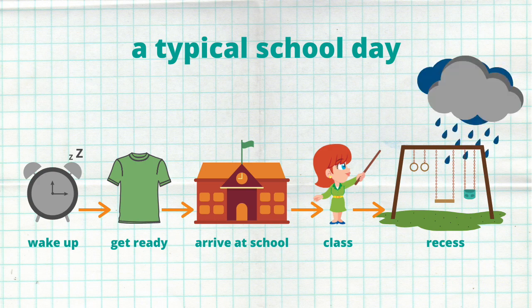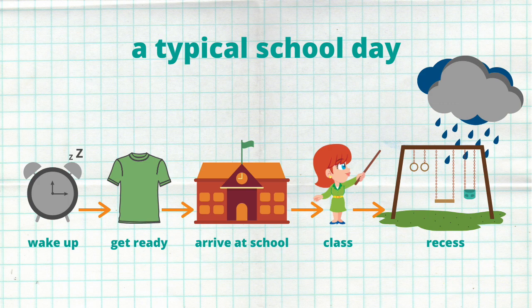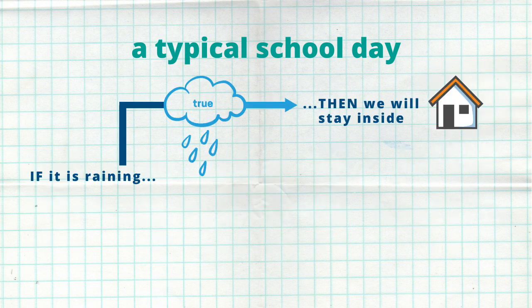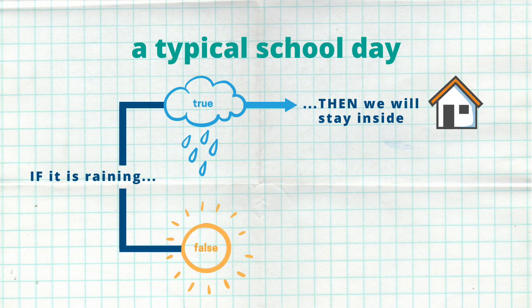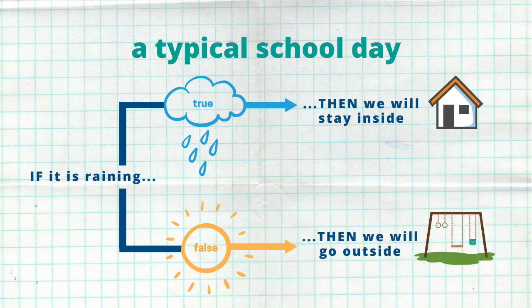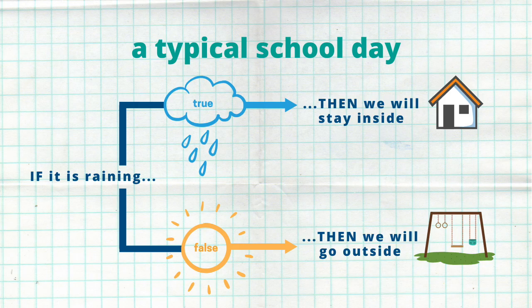But what if it's raining? Then an exception to this rule must be made. If it is raining, then you will stay inside. But if it is not raining, then the condition is false, and we will go outside. Based on the rainy condition, your day will look different.